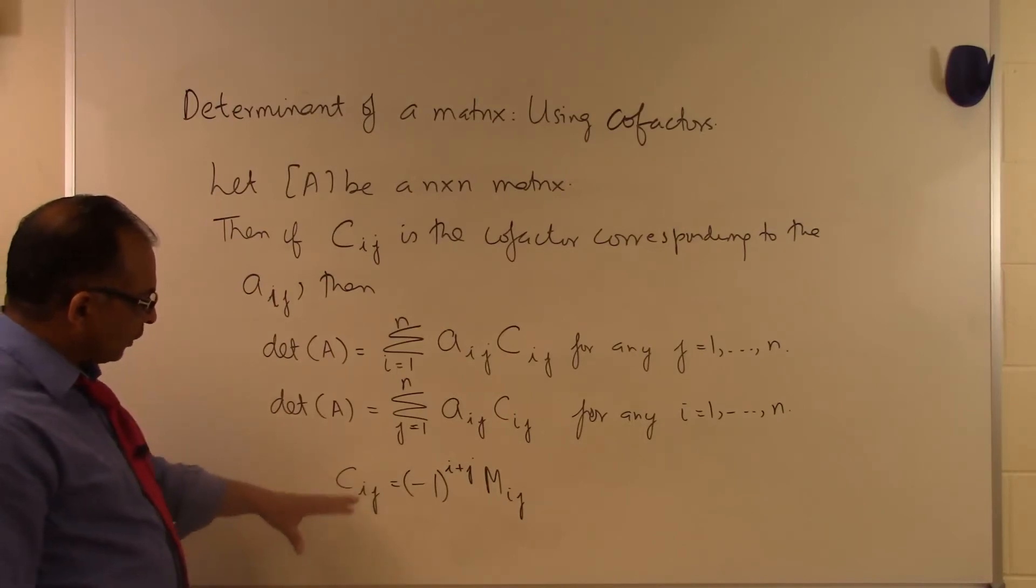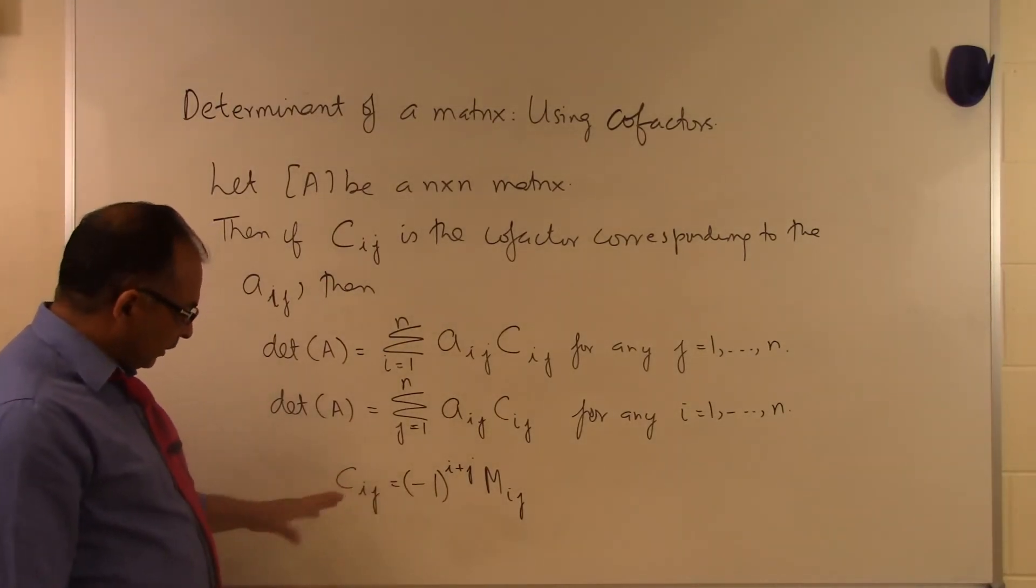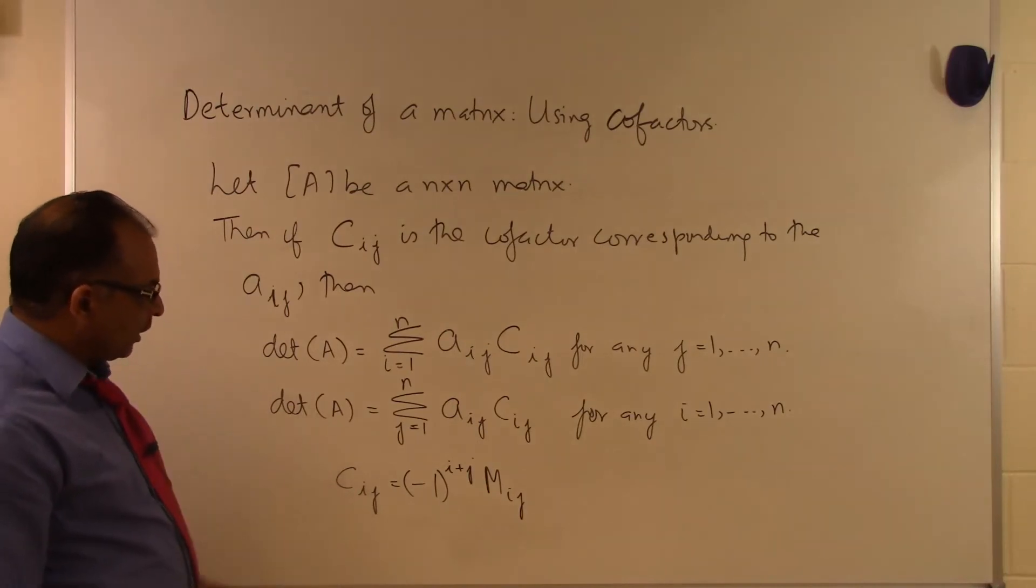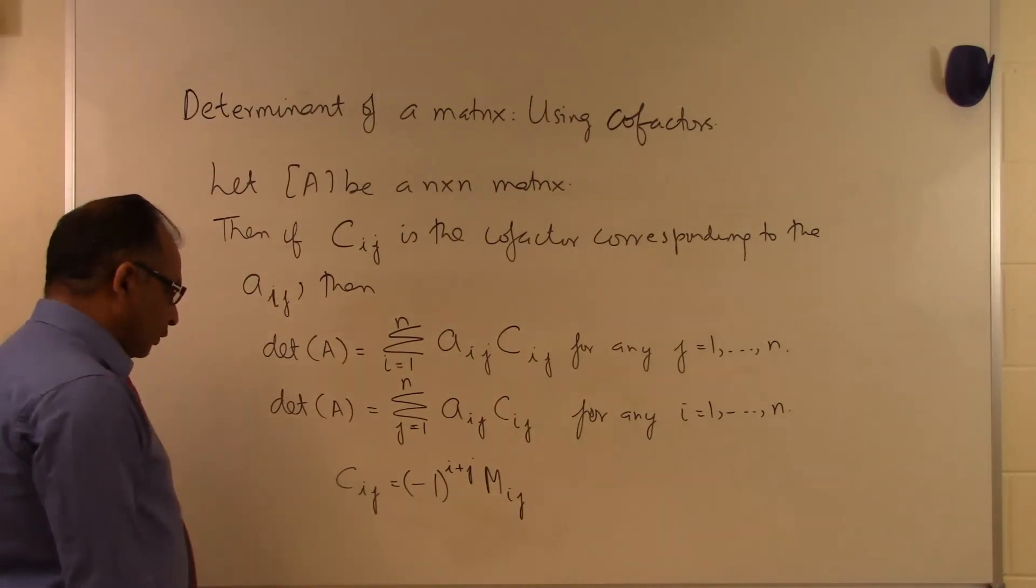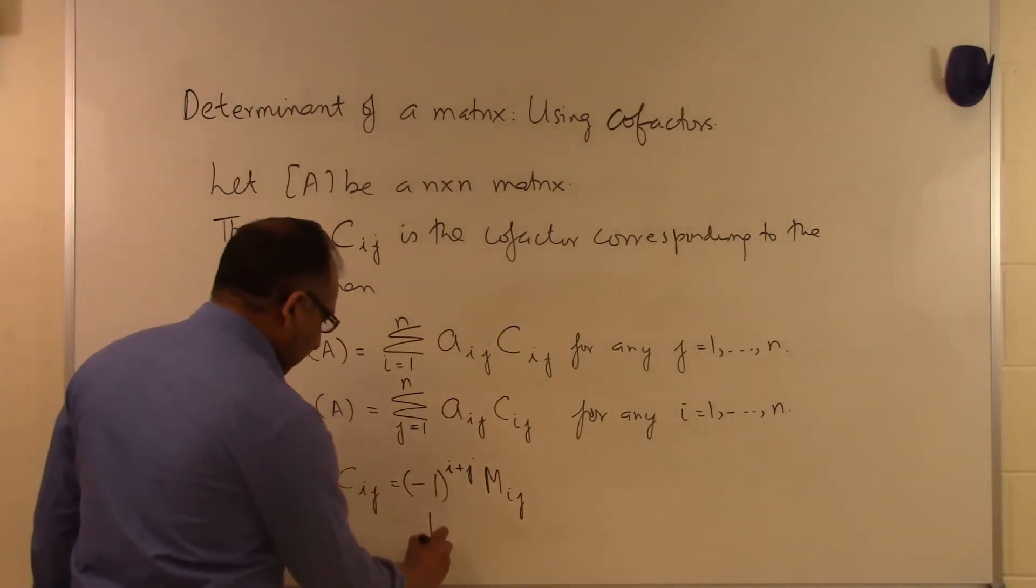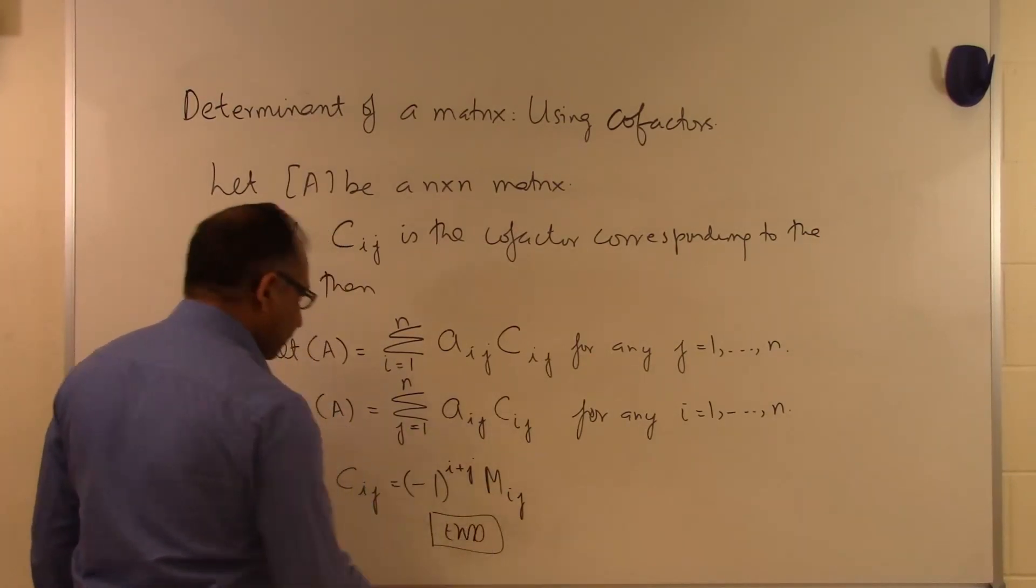So if you look at that particular segment, you will know how Mij is defined. Then you can automatically know how the cofactor corresponding to the Aijth element is defined. And that's the end of this segment.